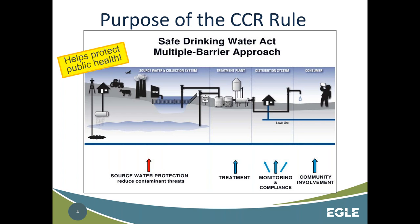The purpose of the CCR rule is to help protect public health, and we all know that there are multiple barriers to protecting public health. Four of which are source water protection, treatment, monitoring and compliance, and community involvement. The CCR addresses that community involvement mechanism because a more educated public can serve as our first line of defense for seeing if there are any issues with our water supply, and we want to be as transparent with them as possible.